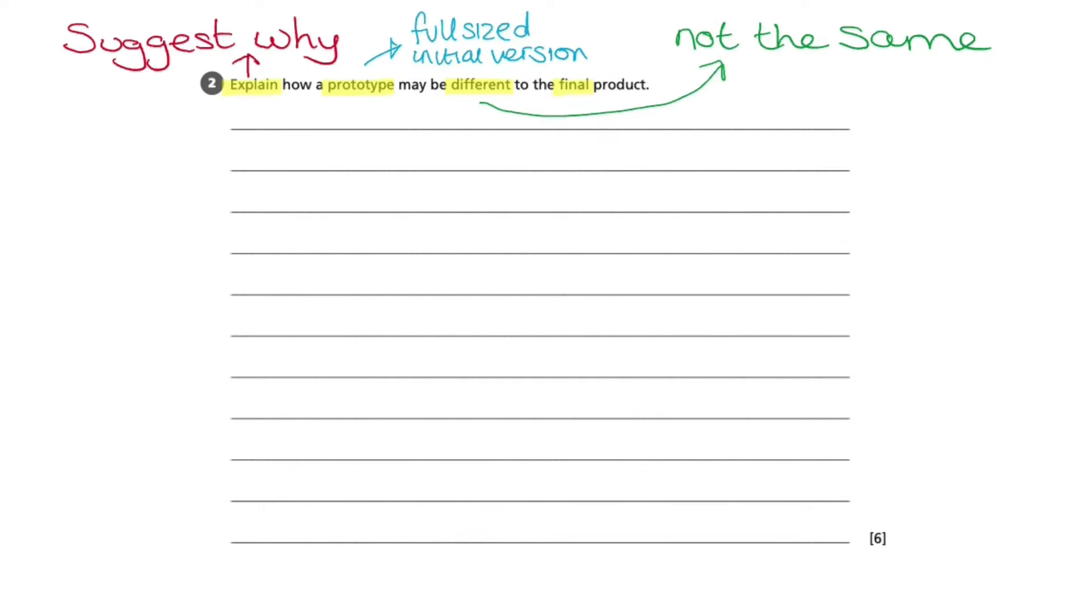We know that the key word different means not the same. And therefore, essentially, this question is asking us to explain the difference between the initial version, which is created as the prototype, and the final product, which goes out to the clients.